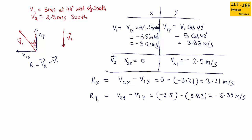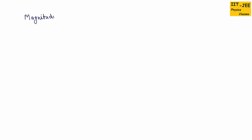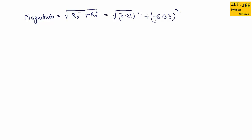Using rx and ry we can find the magnitude of the resultant vector. The formula is the square root of (rx² plus ry²). Plugging in values: square root of (3.21² plus (minus 6.33)²). The square of minus is positive, which gives us 7.1 meters per second. This is our magnitude.